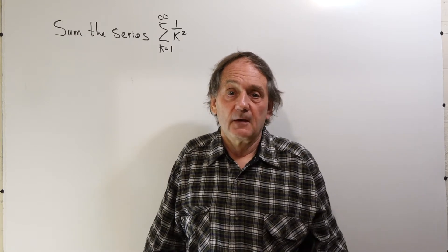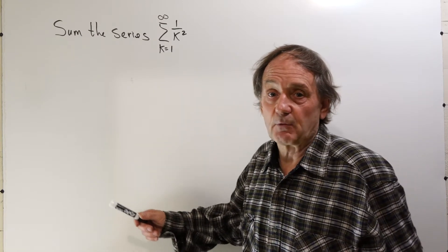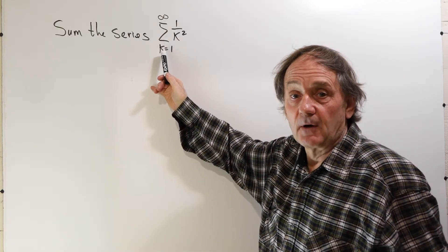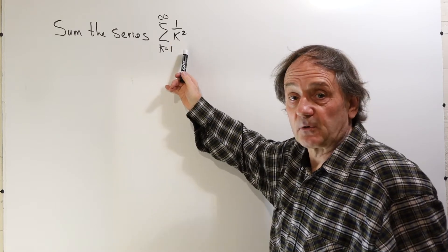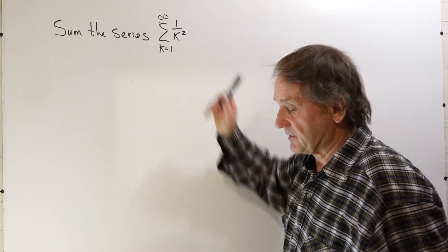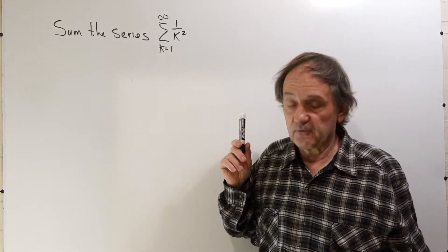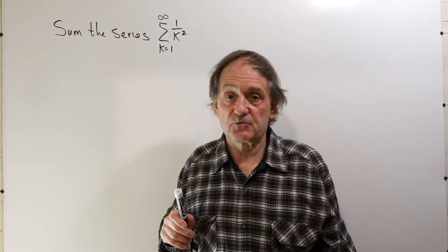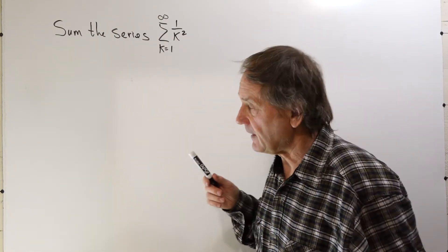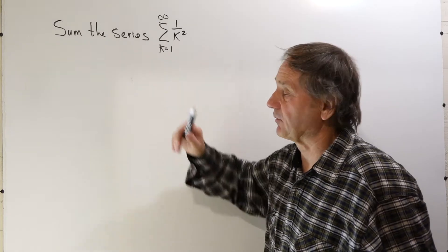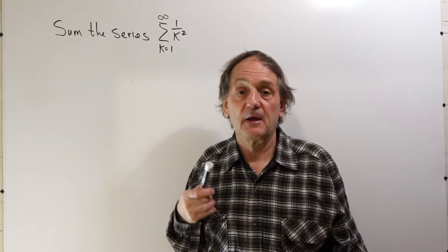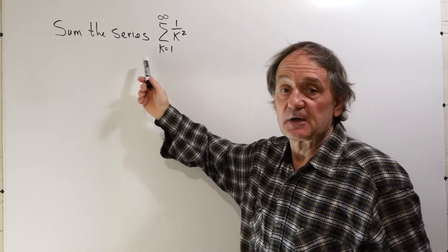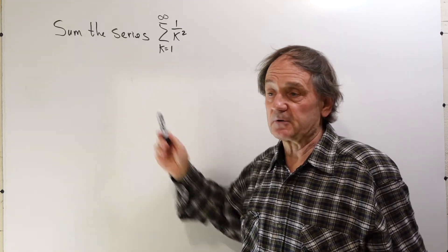Hello, George Notchick here. In this video I'm going to discuss one of the ways to sum this particular infinite series. It's the sum of the reciprocal squares of the integers. This was an open problem for hundreds of years — no one could sum this series. It turns out that the sum is transcendental; it involves pi. The first person that was able to sum this was Euler, who was probably the greatest mathematician who ever lived, and I'm going to discuss how he summed this particular series.